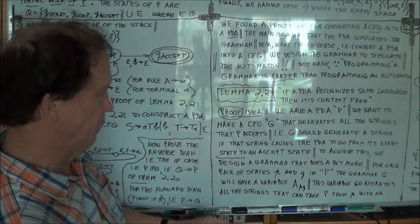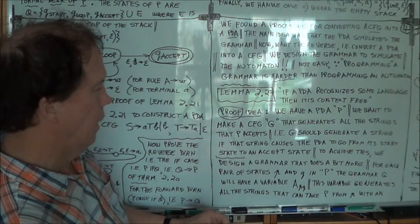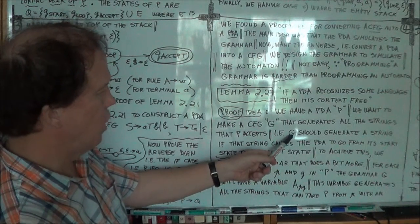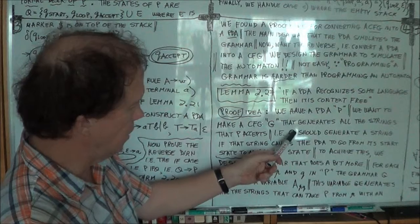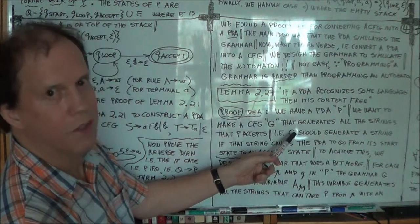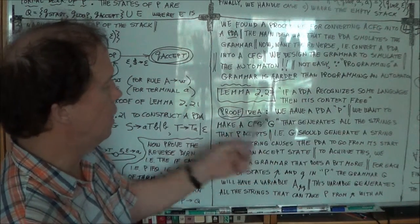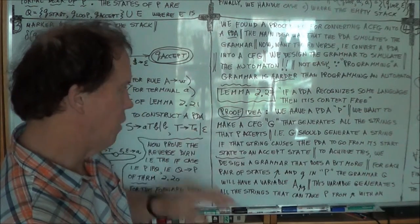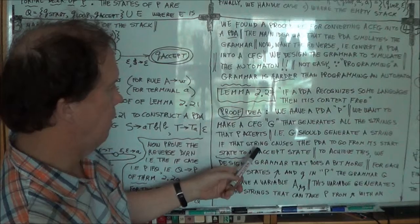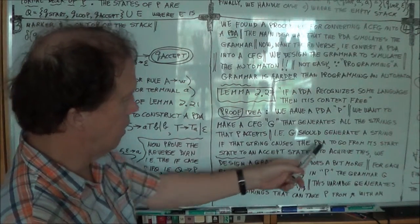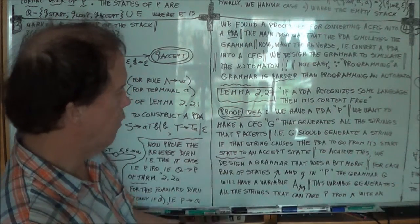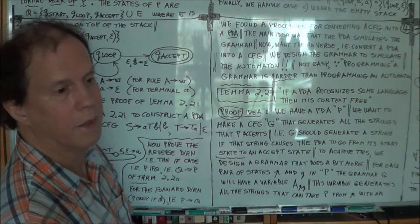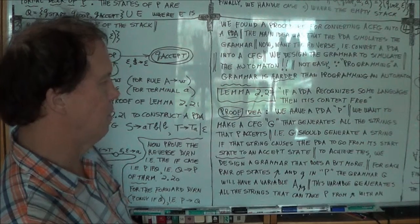So in other words, as G, it should, now it's a grammar, right? Grammars generate strings, okay? So this G should generate a string, the same string, if that same string makes the PDA go from its start state to its accept state. In other words, the PDA recognizes it. Right?